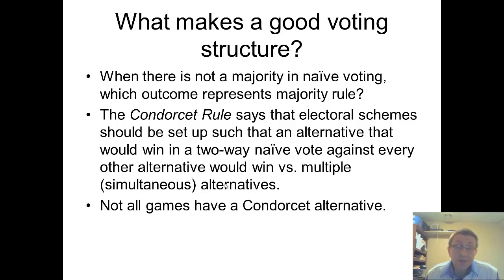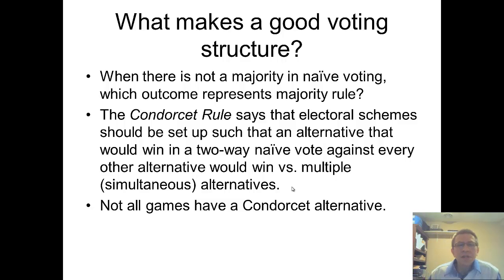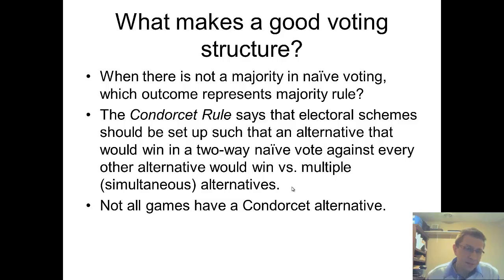This does happen — not all elections have a Condorcet alternative, meaning someone who always wins in every heads-up matchup. But when there is a Condorcet candidate who always wins one-on-one, you might still have an electoral scheme that doesn't result in them winning. That would be considered a bad electoral scheme according to the Condorcet rule.